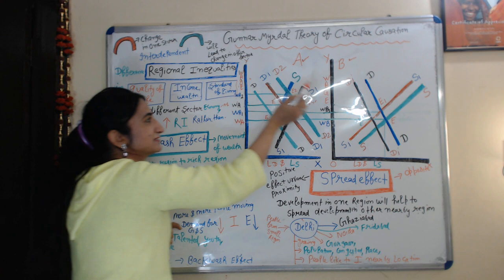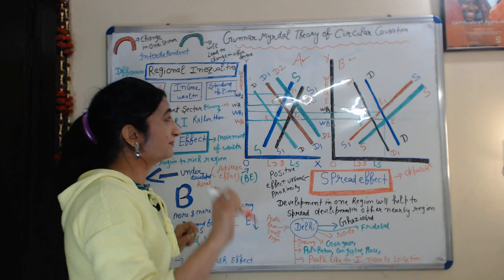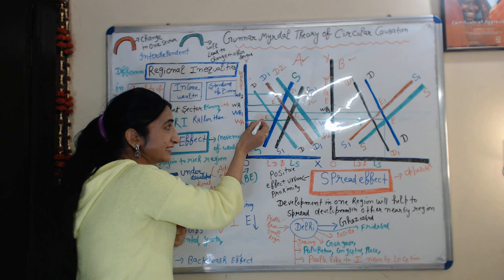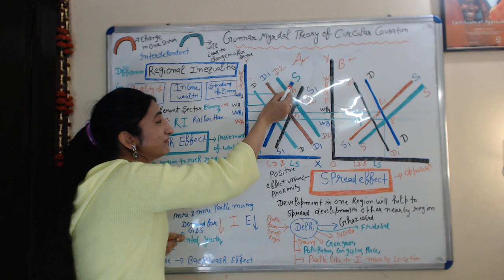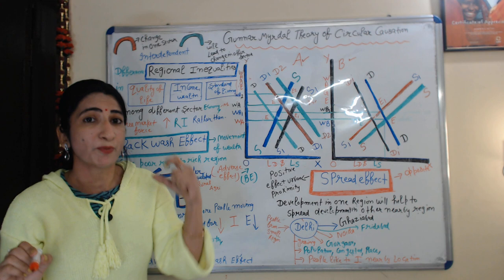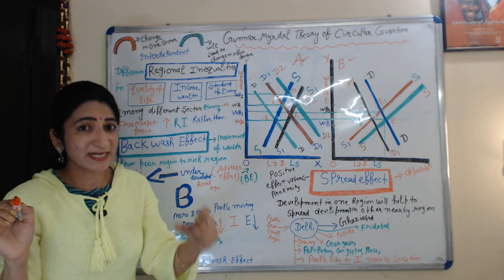The vertical side shows wage rate for both diagrams. The initial equilibrium in region A — the developed region — is at point E, where the DD demand curve equals the SS supply curve. The initial equilibrium point in the developed region is at E, and the initial wage rate in the developed region is WA.